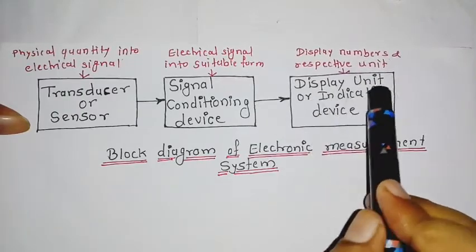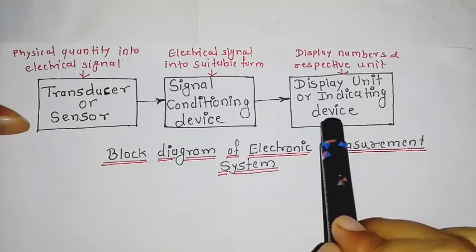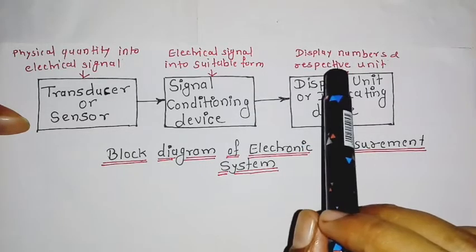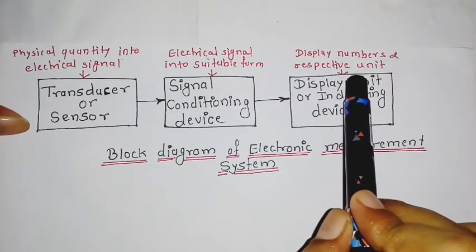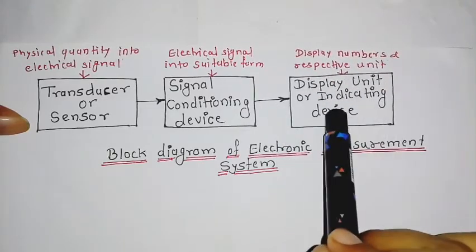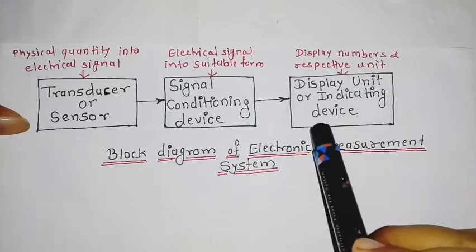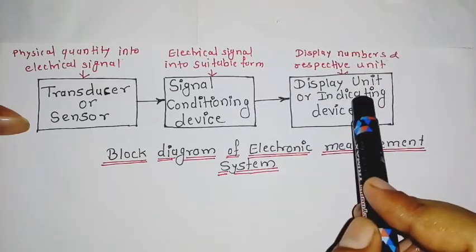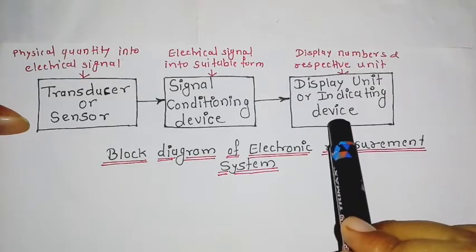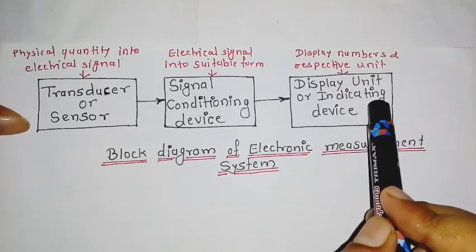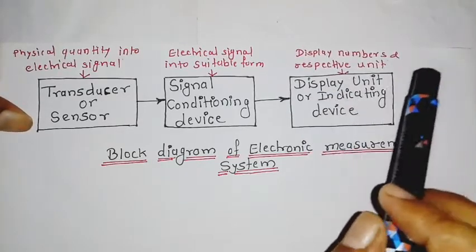The display unit or indicating device displays the quantity under measurement in terms of numbers and respective units. Display devices can be in the form of a dial pointer, LED display, or LCD display.